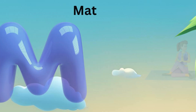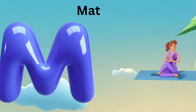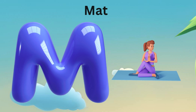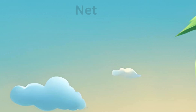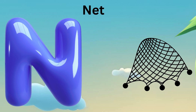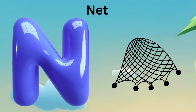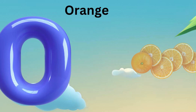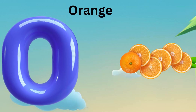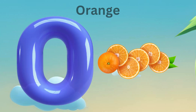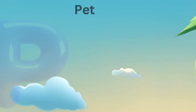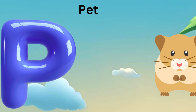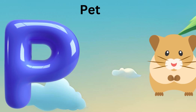M is for Monkey, M-M-Monkey. N is for Net, N-N-Net. O is for Octopus, O-O-Octopus. P is for Parrot, P-P-Parrot.